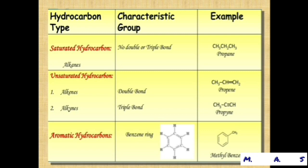Aromatic hydrocarbons have the benzene ring as the characteristic group, with C6H6. The example given is methyl benzene — a benzene ring with a methyl group (CH3) attached.